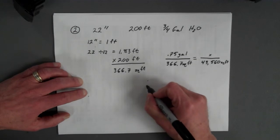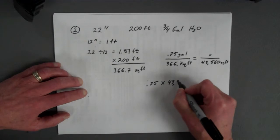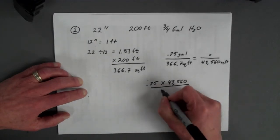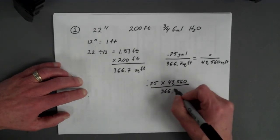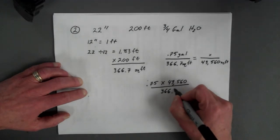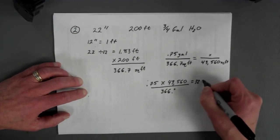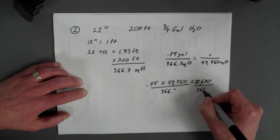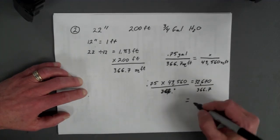You take your 0.75 gallons times your 43,560 square feet. And you divide that figure, which is 32,670. And then you take your 32,670 divided by 366.7 and that gives us our answer of 89